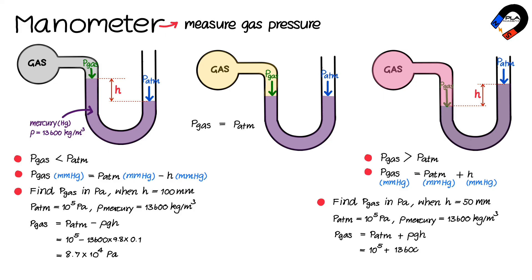g = 9.8, and h = 0.05 meters into the equation yields a gas pressure of 1.07 × 10⁵ pascals.